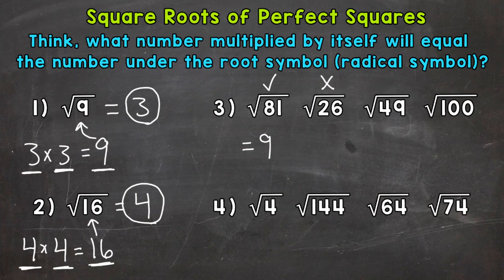Let's do the other two, which are perfect squares. The square root of 49 — 7 times 7 equals 49, so the square root of 49 equals 7, and this is a perfect square. Lastly, we have the square root of 100. We know 10 times 10 equals 100, so the square root of 100 equals 10, and this is a perfect square.